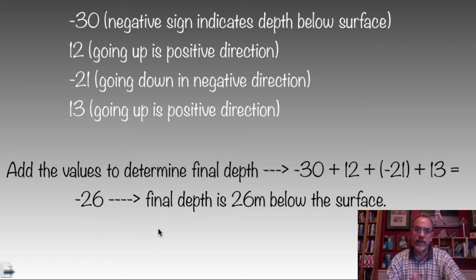So the submarine is ending up at negative 26, which, interpreting what does the negative sign mean in terms of the problem that we're looking at, the negative sign indicates it's that 26 feet below the level of the surface, where the surface of the water would be zero.